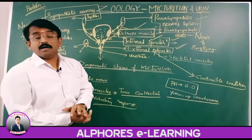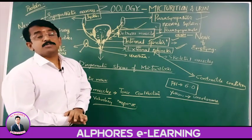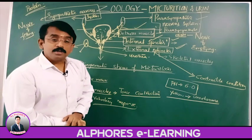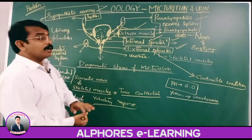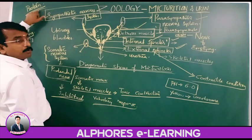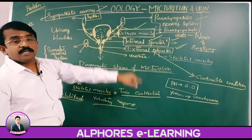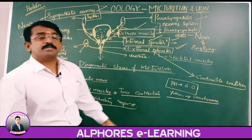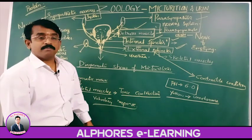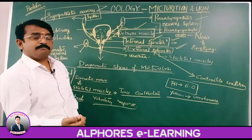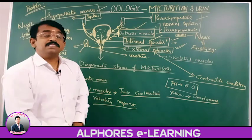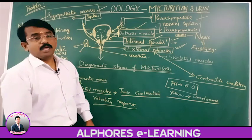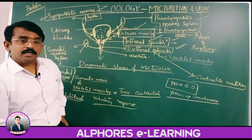Protein has an amine group, so deamination takes place and urea is immediately synthesized. If one is eating more protein content, definitely the urea synthesis is more and urea is reflected in the urine. So food, vegetables, and fruits we take affect the urine composition.